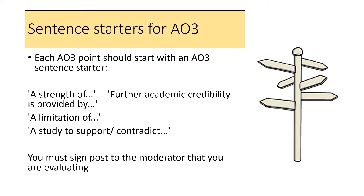Sentence starters are so important for AO3. By sentence starter, I mean you're signposting to the moderator that you're evaluating. That could be 'a strength of' — although that gets boring if repeated — so you could mix it up and use 'further academic credibility is provided by' or 'further empirical evidence was conducted by.' You can also use 'a limitation of,' 'a study to support,' or 'a study to contradict.' You need something at the start of an AO3 point to show the moderator you are starting evaluation so they can award you evaluation marks.